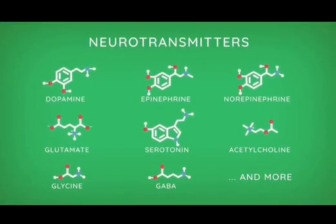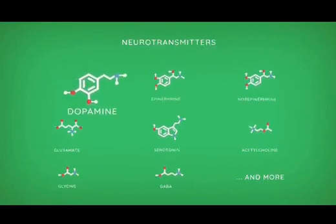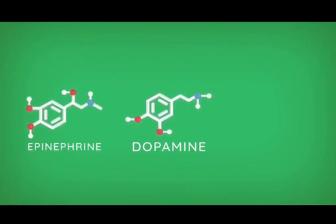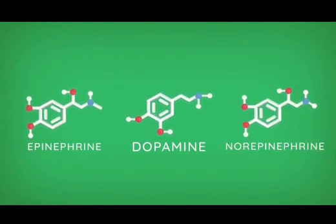Now, there are many different types of neurotransmitters. Each neurotransmitter is unique, but let's take a look at dopamine. Dopamine, along with epinephrine and norepinephrine, is part of a family called the catecholamines.